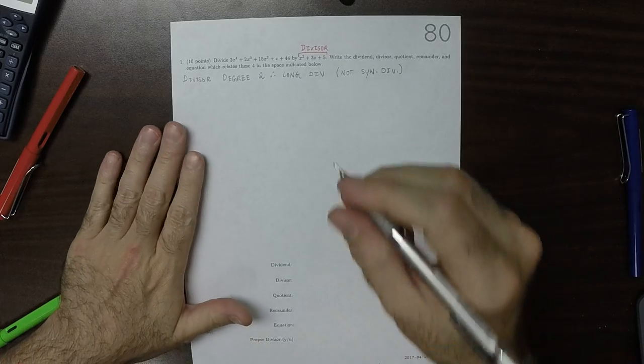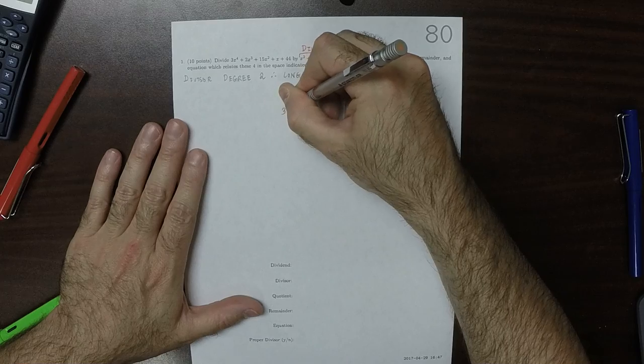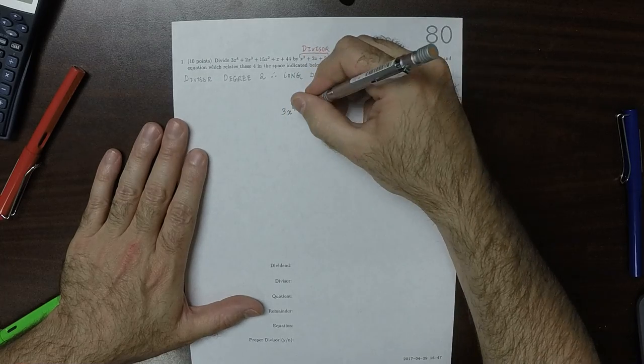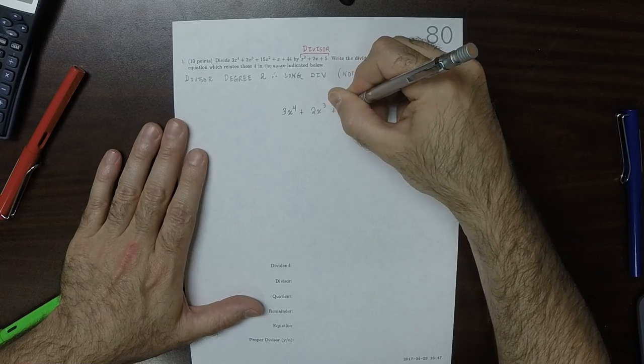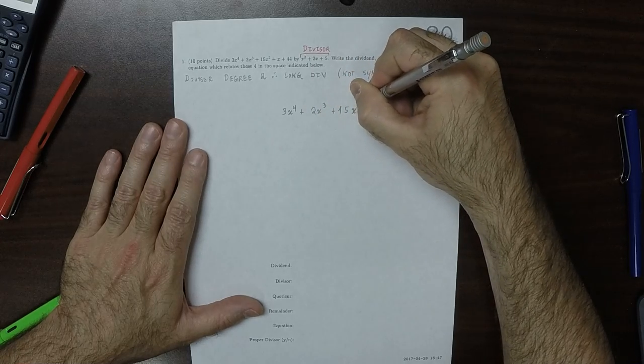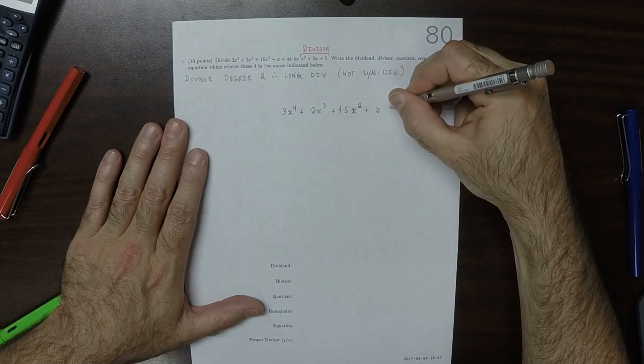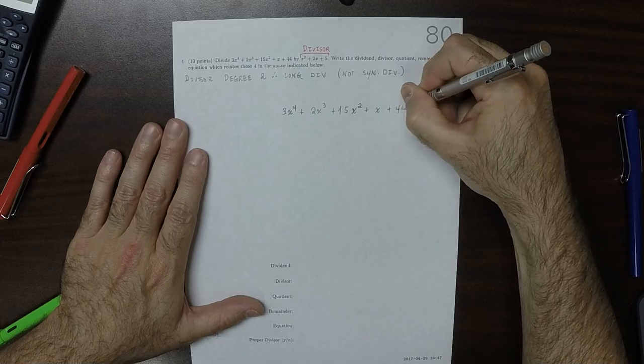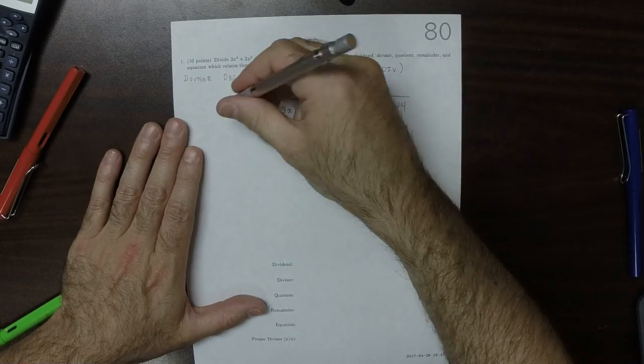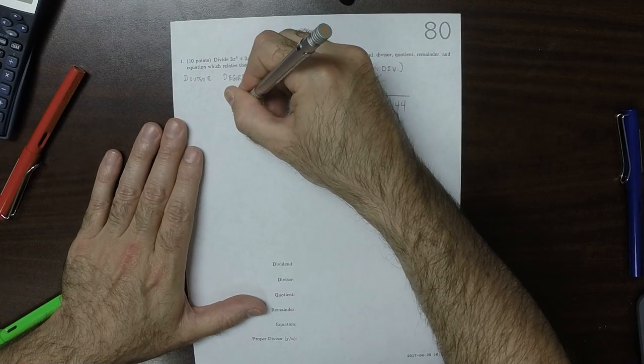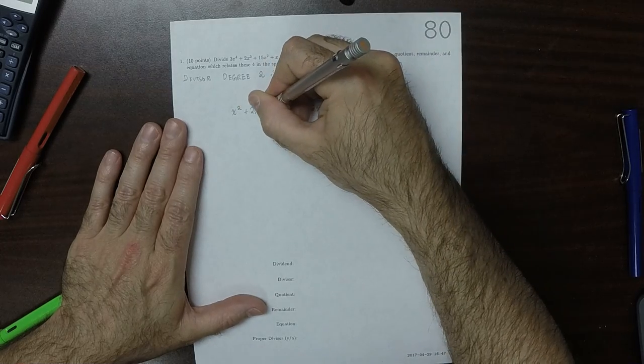So we'll use long division. 3x to the 4 plus 2x to the 3 plus 15x to the 2 plus x plus 44, divided by x squared plus 2x plus 5.